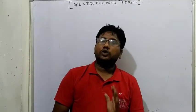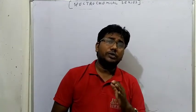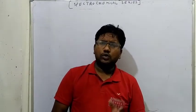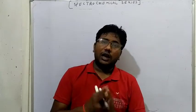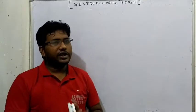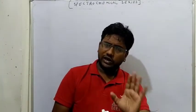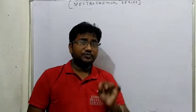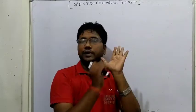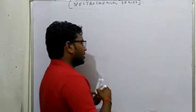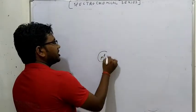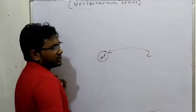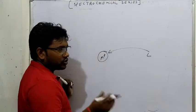चलिए start करते हैं - Spectrochemical Series हम क्यों पढ़ रहे हैं, हमारे लिए जरूरी क्यों है और क्यों design किया है। थोड़ा सा वापस ले जाना चाहता हूँ। आपको पता है Octahedral Complex बनता था, एक Tetrahedral Complex बनता था। Tetra को छोड़ दीजिए थोड़ी देर के लिए, Octa सुन लीजिए। Octahedral Complex कब बनता था - metal जो होता था वो center में रहता था, stationary state में, और ligands approach करते थे उसके पास।